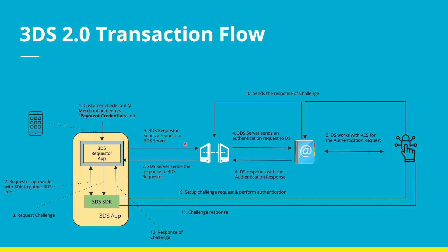The key thing here is apart from the standard authentication request that we see in 3DS 1.0, the change here is there is a lot of other data that is also sent as a part of this authentication request thanks to the 3DS SDK, and then we have the challenge being established between the 3DS SDK and the ACS.